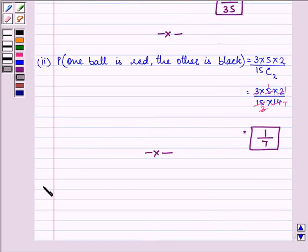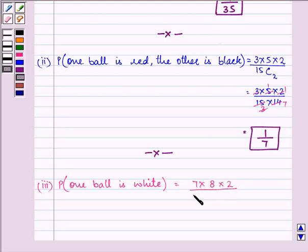Let us proceed to do the last part. Now, here we need to find out the probability that one ball is white. So it will be equal to 7 into 8 into 2 divided by 15 into 14. That is 15C2 itself.